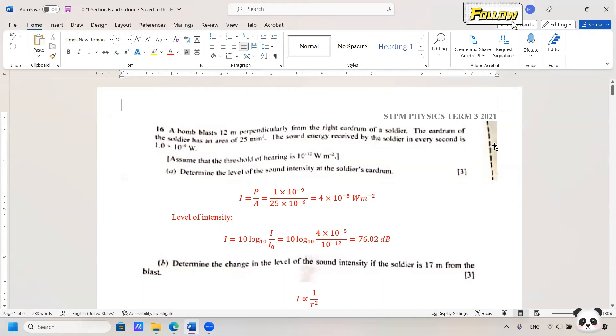Good day. We discussed the passage in 2021 question 16, which is about the sound wave. One blast 12 meters perpendicularly from the right eardrum of a soldier. The eardrum of the soldier has an area of 25 mm² and the sound energy received by the soldier in every second is 1 times 10 to the power of negative 9 watt.